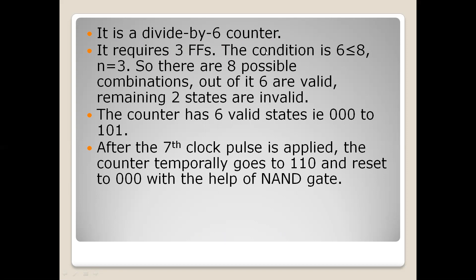In a mod 6 counter, six is less than or equal to eight. Since we have three bits, two raised to three equals eight possible combinations. Out of these, six states are valid (000 to 101) and the remaining two states — 110 and 111 — are invalid states.